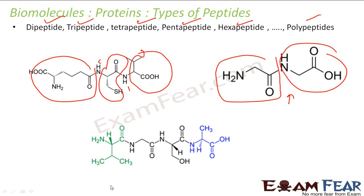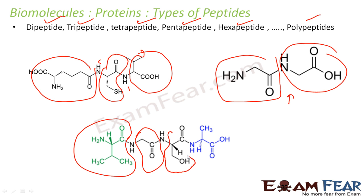In a tetrapeptide, four amino acids are joined by three peptide bonds. You can see here: one amino acid, one bond, one amino acid, one amino acid, and one amino acid — that is four amino acids joined by three peptide bonds. This is a tetrapeptide.